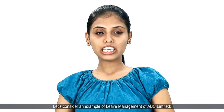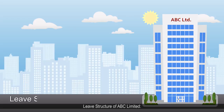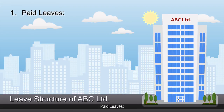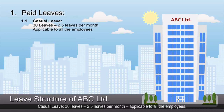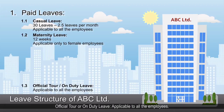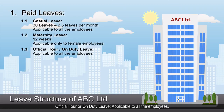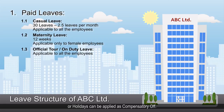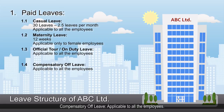Let's consider an example of leave management of ABC Limited and configure it in the COSAIC web application. The leave structure of ABC Limited includes: Paid leaves — Casual leave: 30 leaves, 2.5 leaves per month, applicable to all employees. Maternity leave: 12 weeks, applicable only to female employees. Official tour or on-duty leave: applicable to all employees. Official tour or duty on week offs or holidays can be applied as compensatory leave.